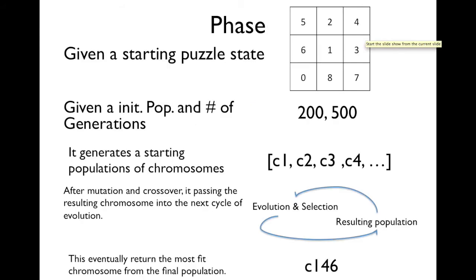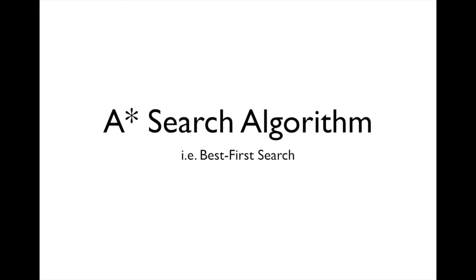Last, we have a phase which combines everything mentioned before. We start with a given puzzle state, just like this one, and a given initial population and the number of generations we want to run. It generates a starting population of chromosomes, and after mutation and crossover, it continues the cycle by passing the resulting chromosome into the next cycle, eventually returning the most fit chromosome from the final population.